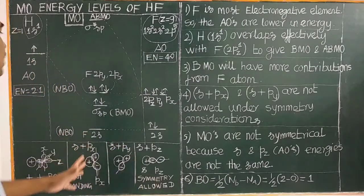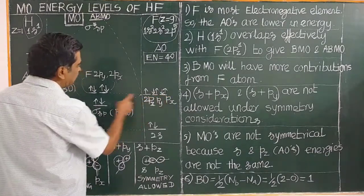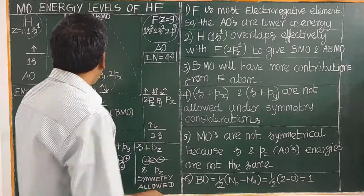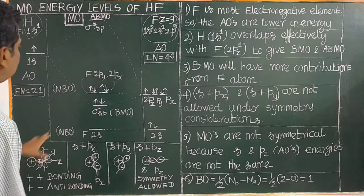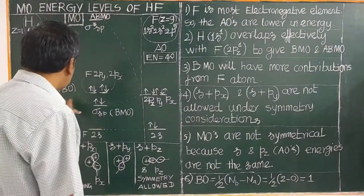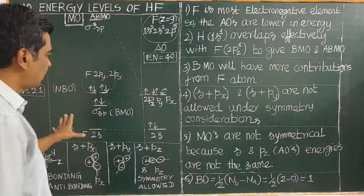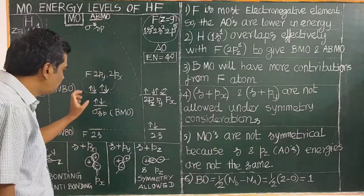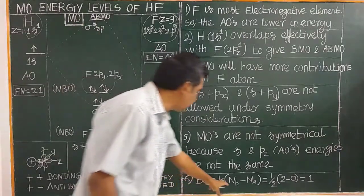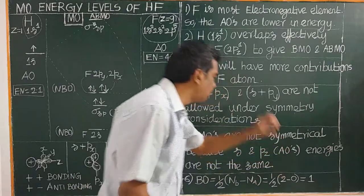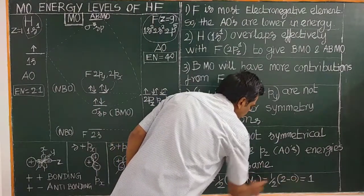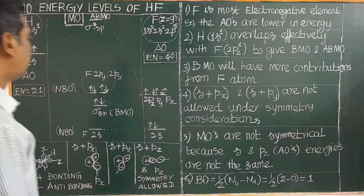There are 2 non-bonding orbitals. There is 1 bonding molecular orbital and 1 anti-bonding molecular orbital. Bond order is equal to one-half times the number of electrons in bonding orbitals minus the number of electrons in anti-bonding orbitals. The number of electrons in the bonding orbital is 2, and the number of electrons in the anti-bonding orbital is 0.